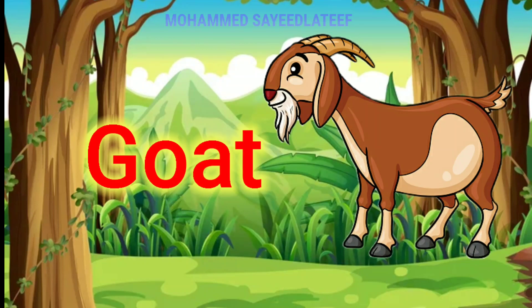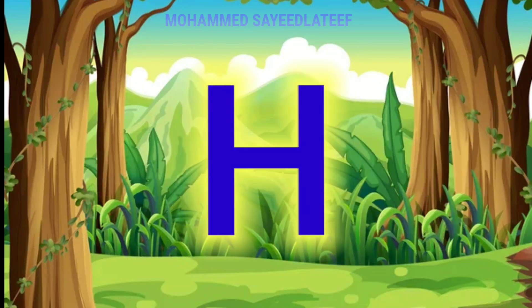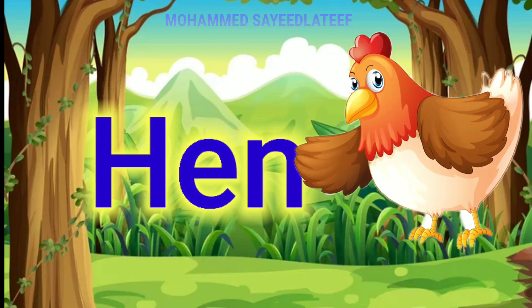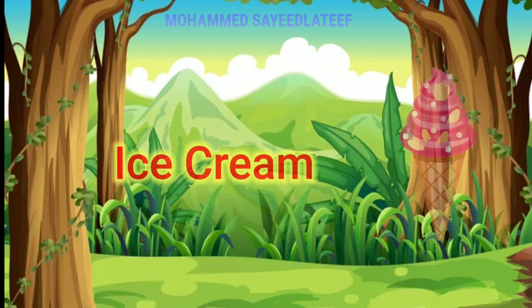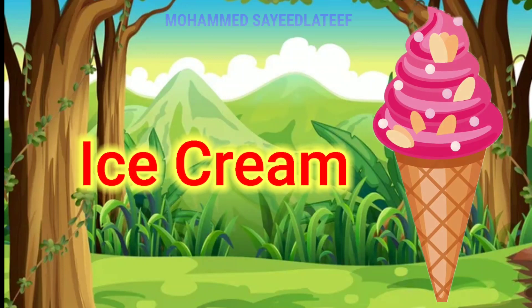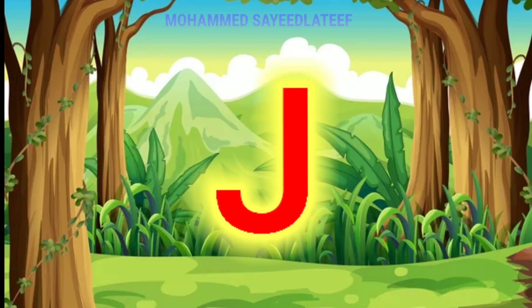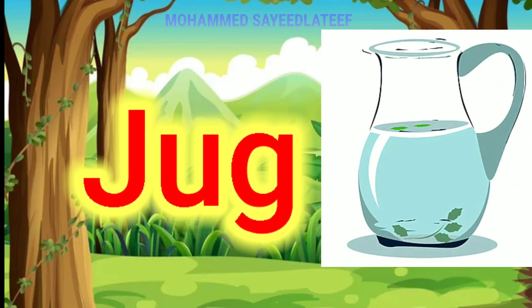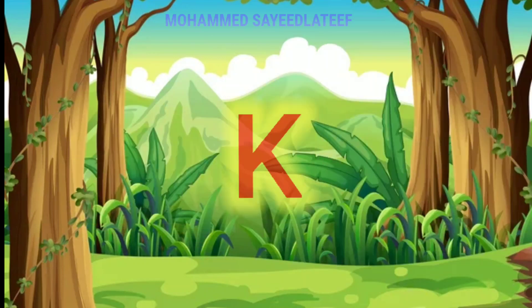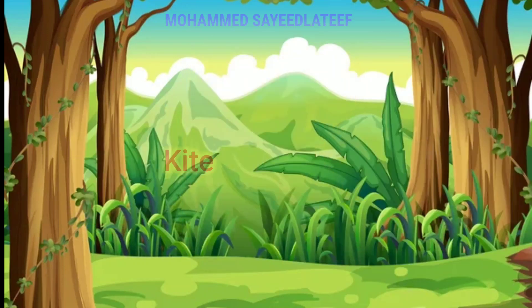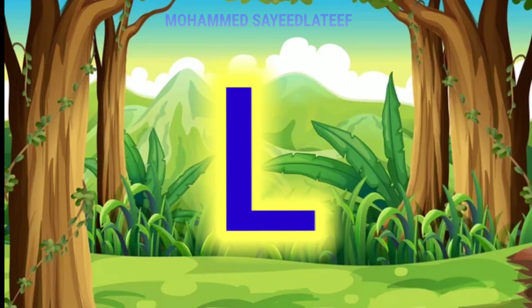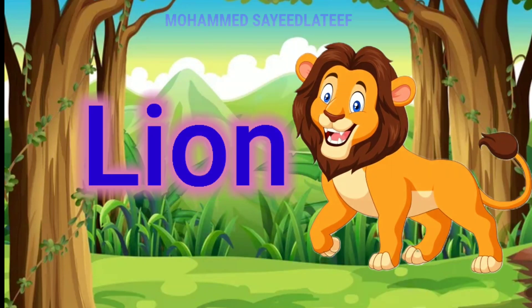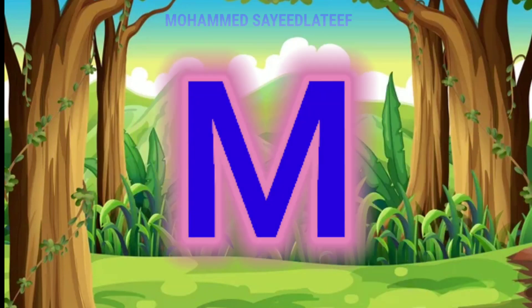G for boot, H for hen, I for ice cream, J for jug, K for ki, L for lion.